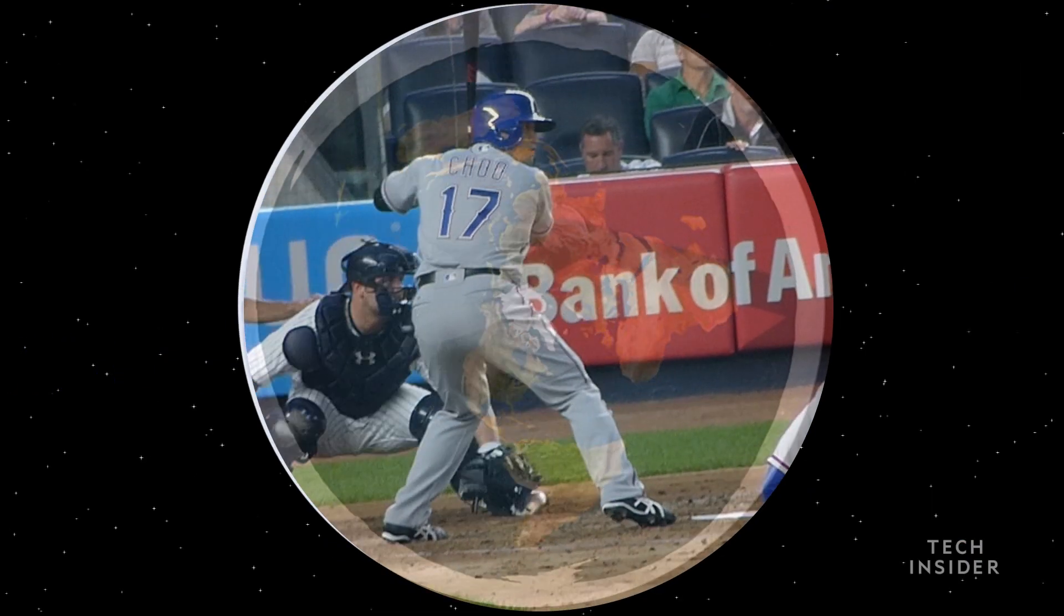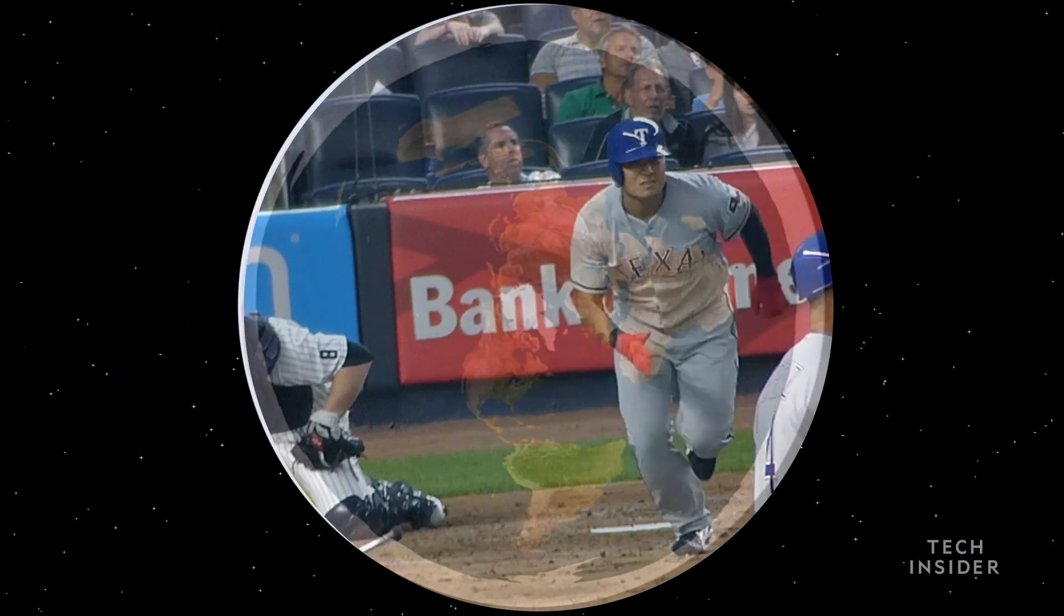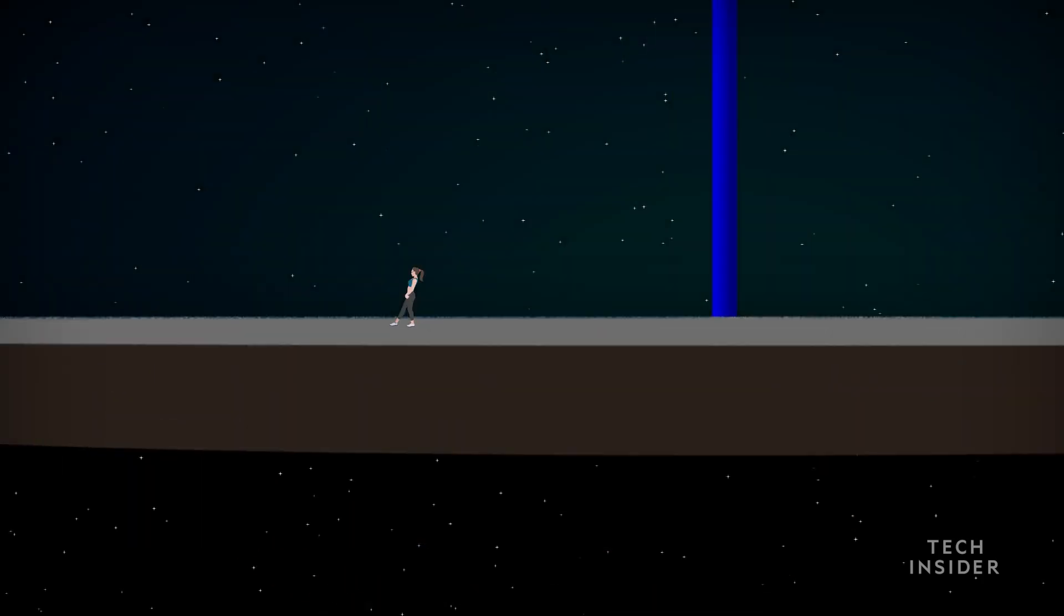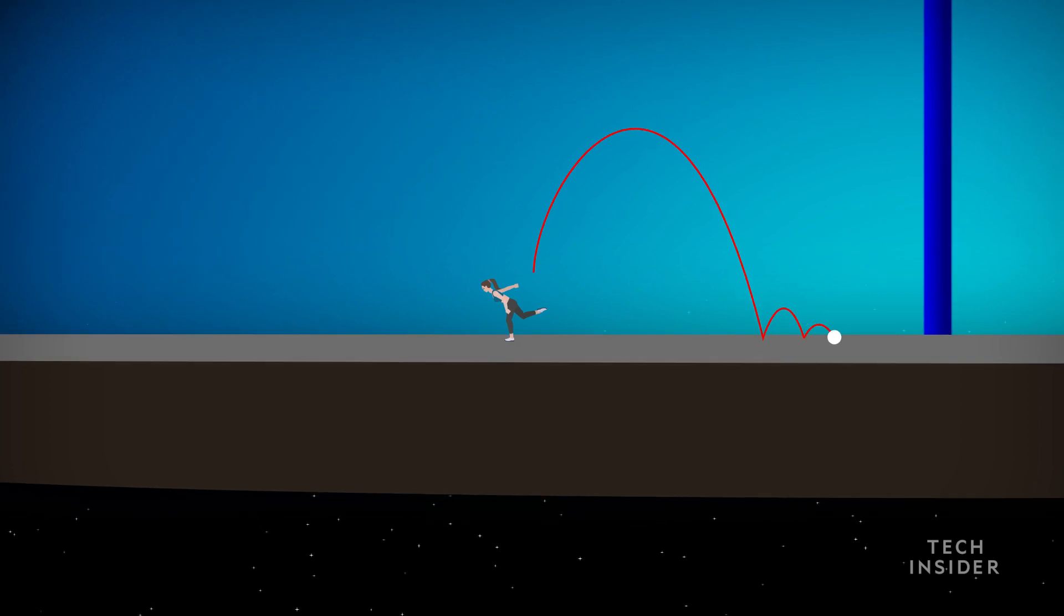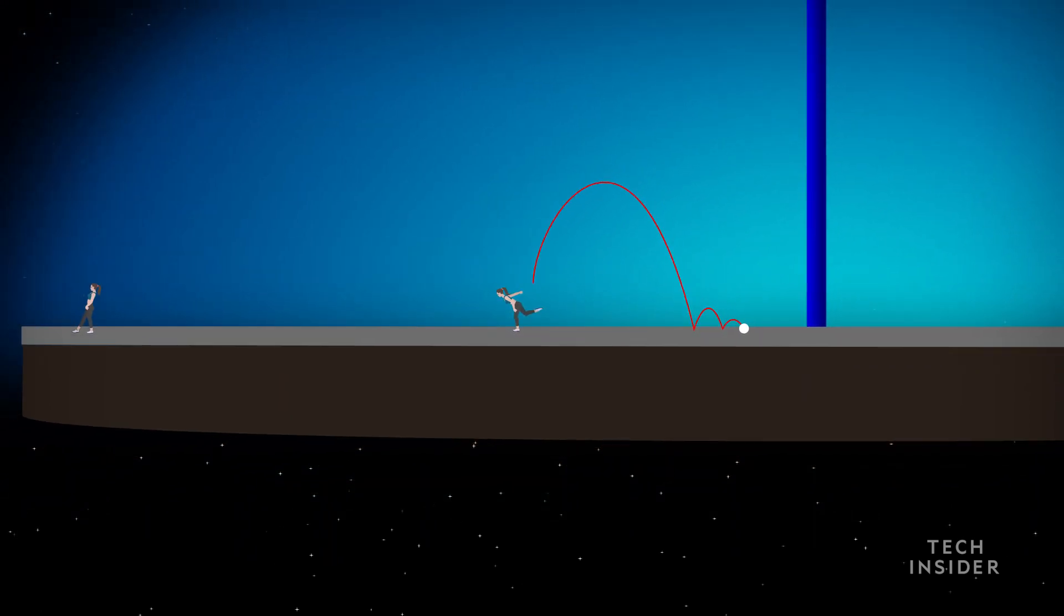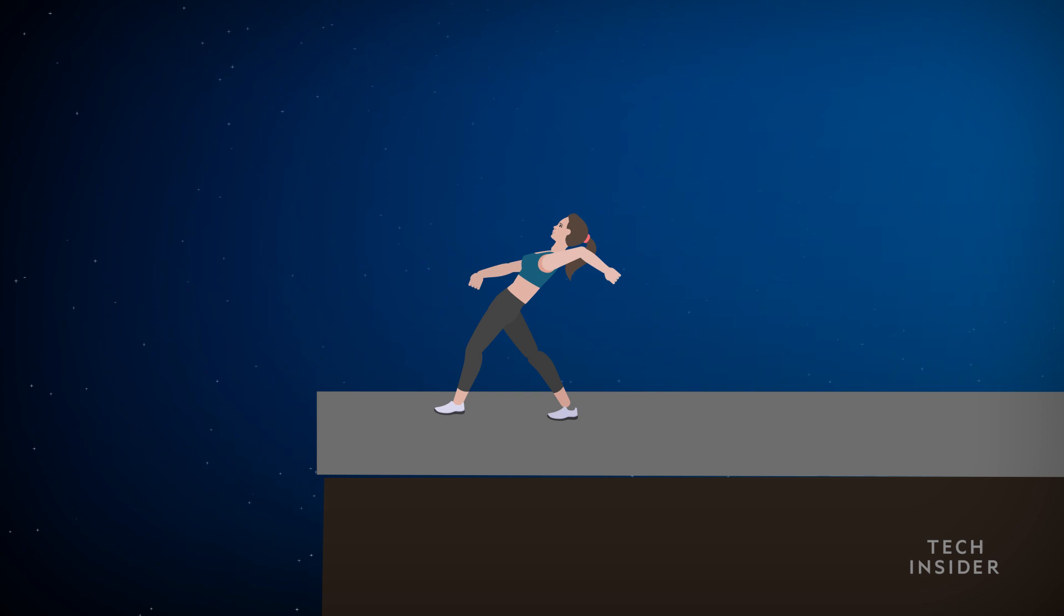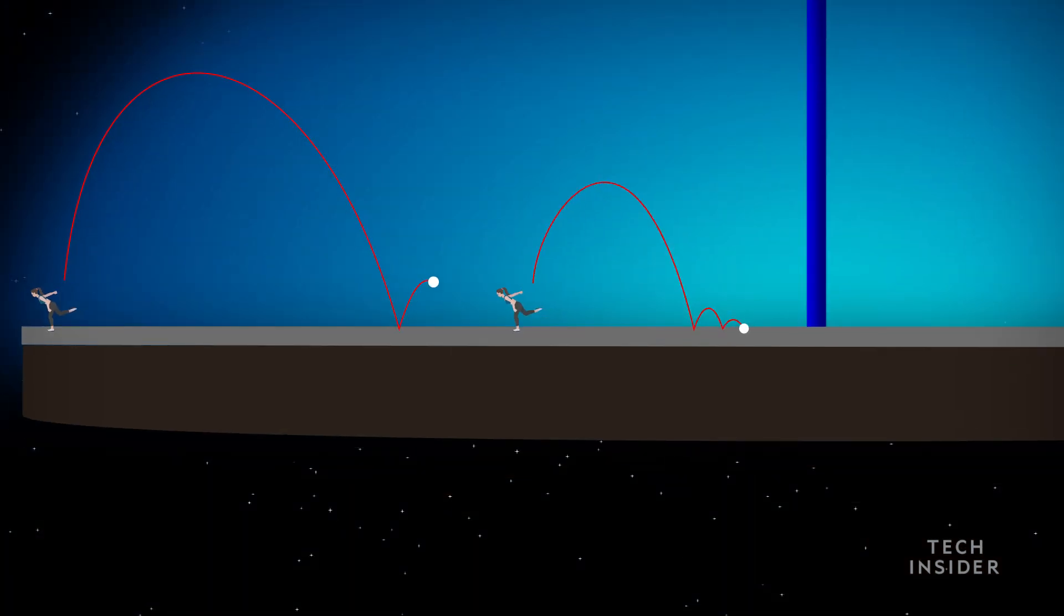This would wreak havoc on sports played in different parts of the world. A ball thrown straight up in the air midway out would curve down and backwards toward the disk center. Plus that ball wouldn't go nearly as high or far as a ball thrown up at the edge where gravity's downward pull is practically zero.